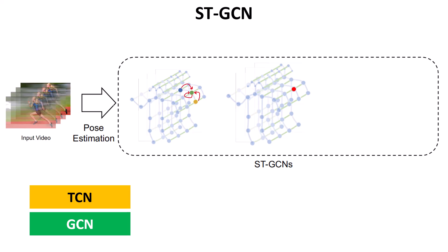To understand how TCN works, let's look at the previous frame and the next frame. In those frames, we also have elbows, which likewise receive information from the wrist and shoulder — that's the GCN part. TCN models the temporal relationship of a single joint across different frames. If we focus only on the elbow across, say, nine frames, TCN defines a kernel — but unlike CNNs with two-dimensional kernels, here we have a one-dimensional kernel operating over time.